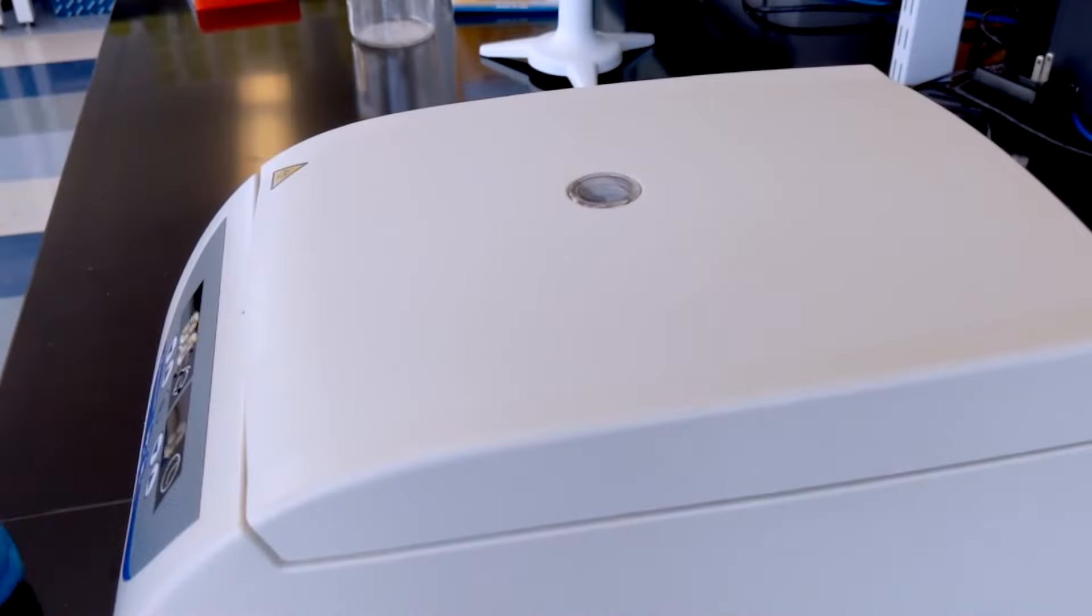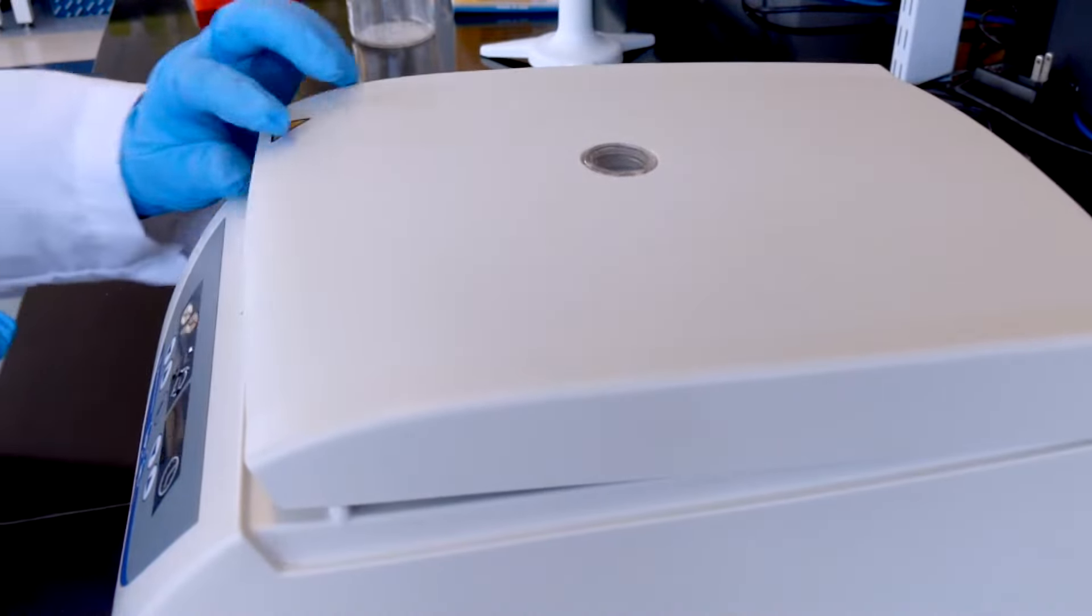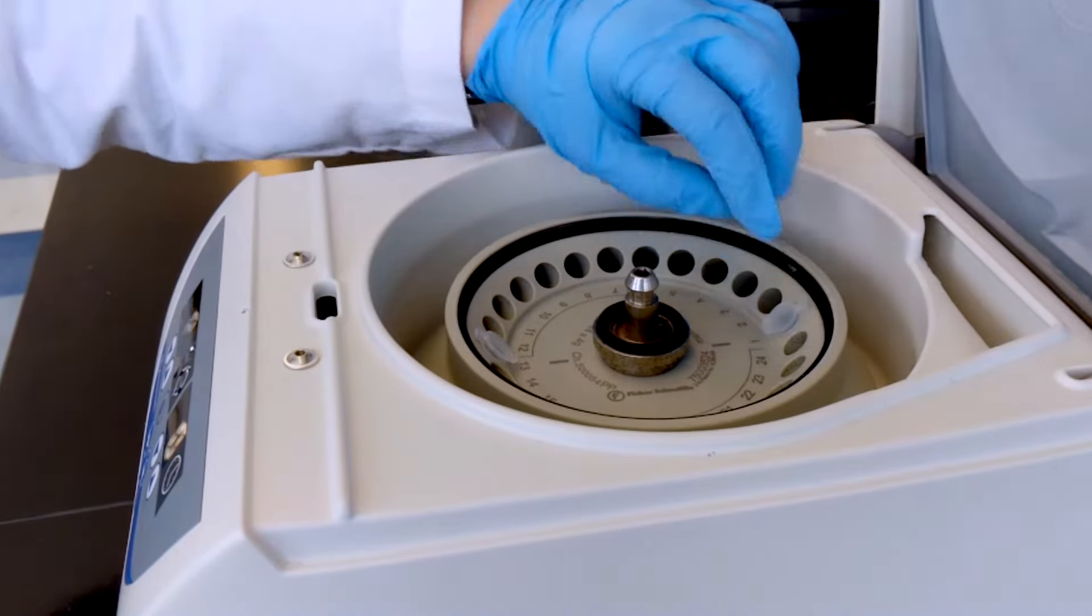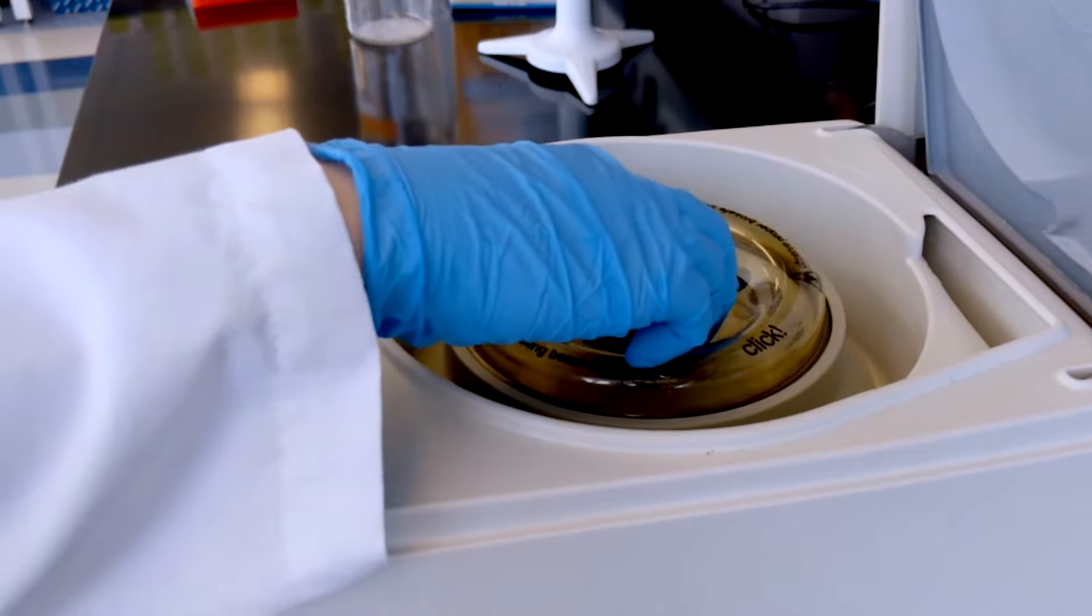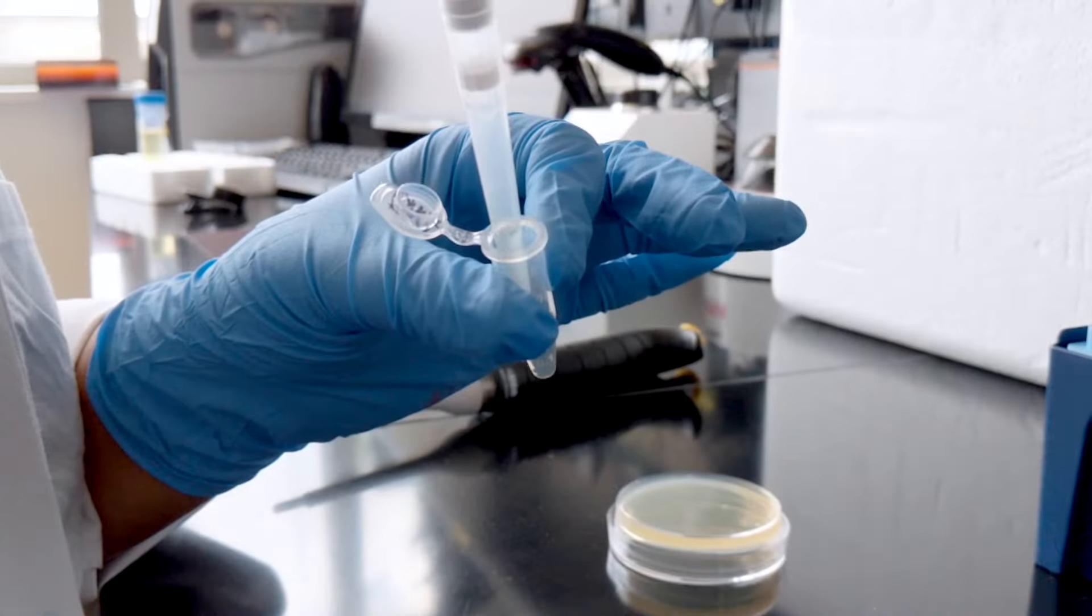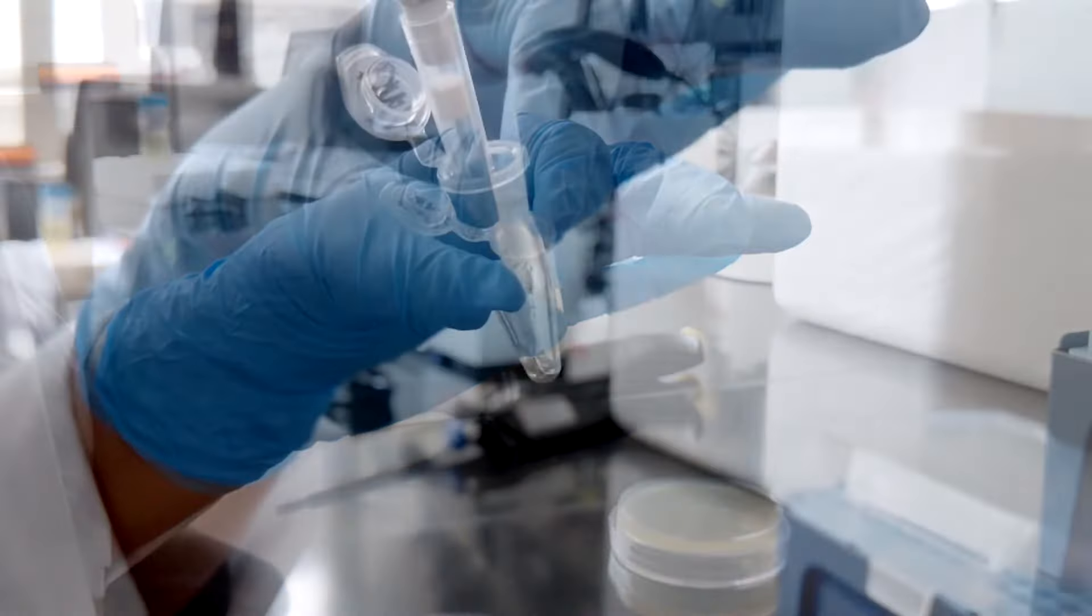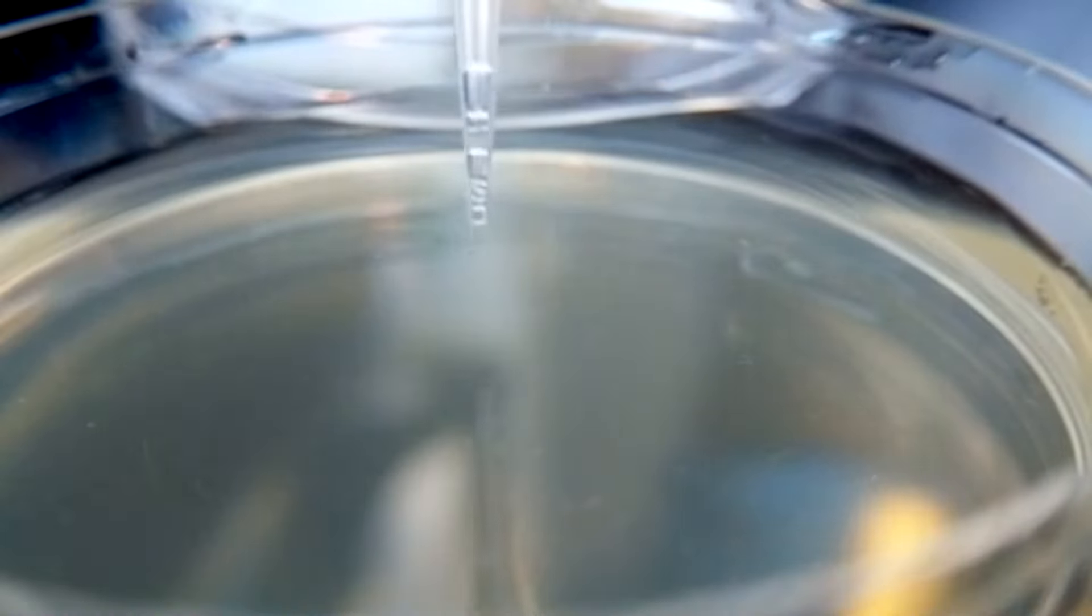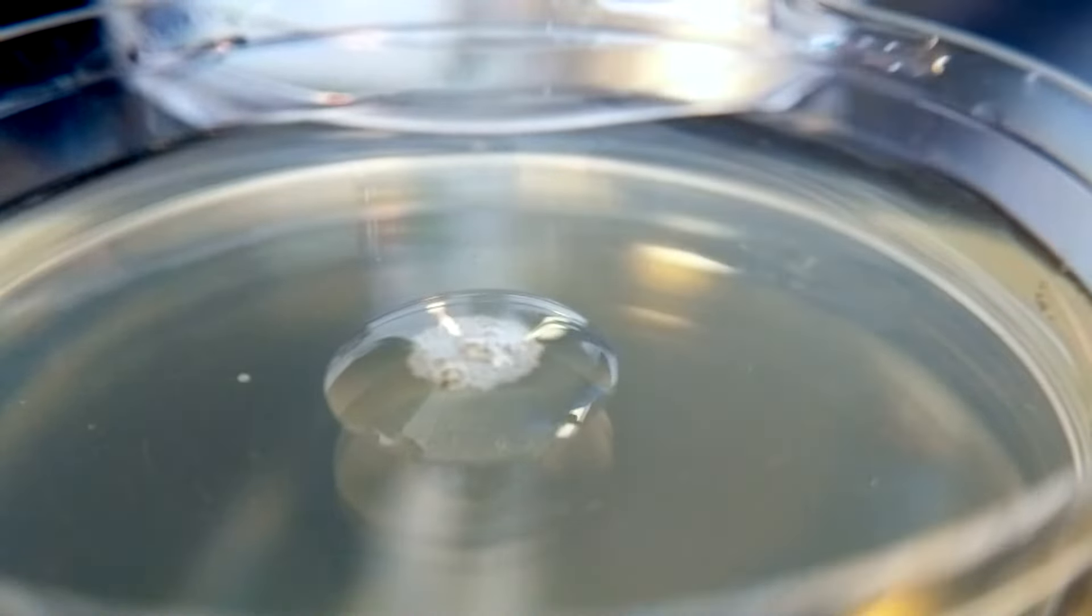To increase the number of colonies you get after plating, you can concentrate your cells after the outgrowth step by centrifuging. We usually centrifuge the cells for 5 minutes at 4000 RPM or 1500 Gs. After you've removed some of the supernatant, you can re-suspend the cells and pipette them on top of a warmed LB agar plate containing the necessary antibiotic.